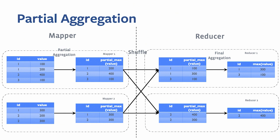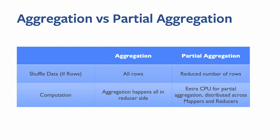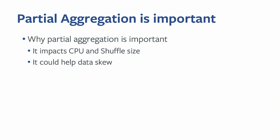Simple comparison: without partial aggregation, every single row is shuffled from mapper to reducer and all aggregation happens in the reducer. With partial aggregation enabled, we shuffle a reduced number of rows, and aggregation is distributed across both mapper and reducer sides. This impacts CPU, shuffle data size, and helps with data skew.